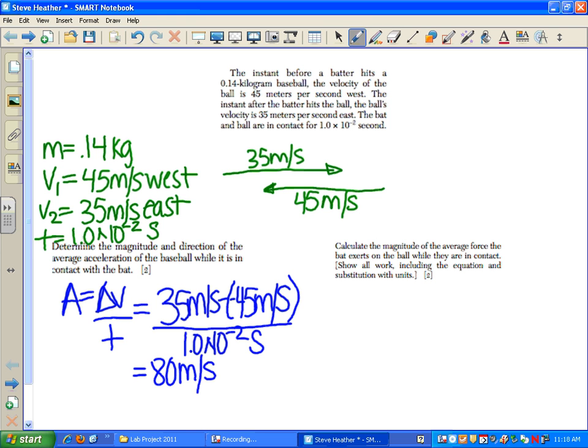When you calculate that, you get 80 meters per second over 0.010 seconds, and it equals 8,000 meters per second squared. And it would be to the east since he's heading it over to the east from the west.